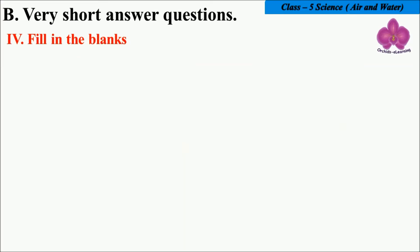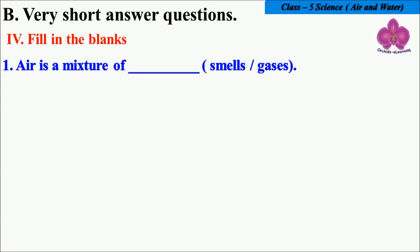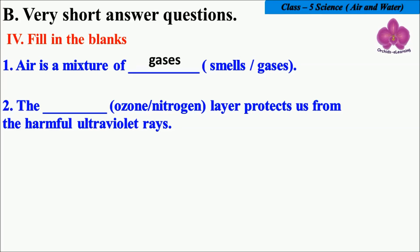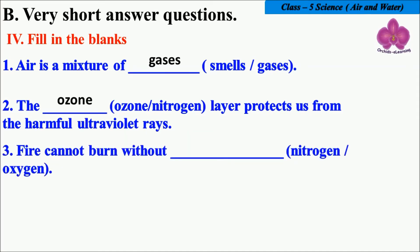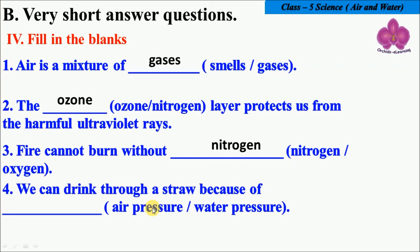Fill in the blanks. First, air is a mixture of — smells or gases? It is gases. The dash layer protects us from harmful ultraviolet rays — ozone or nitrogen? It is ozone. Fire cannot burn without — nitrogen or oxygen? It is oxygen.